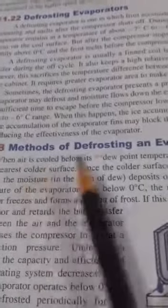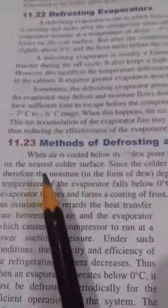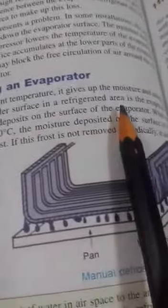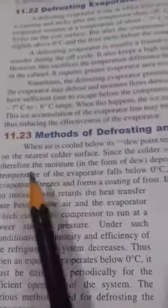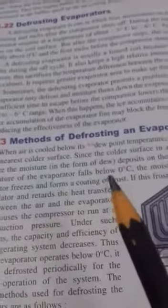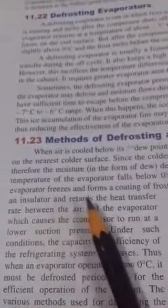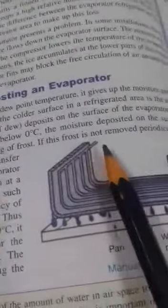Let us discuss the method of defrosting. An evaporator is defrosted when air is cooled below its dew point temperature — it gives up moisture and deposits it on the nearest colder surface. The colder surface in the refrigerating area is the evaporator, so moisture in the form of dew deposits on the evaporator surface. When the evaporator temperature falls below zero degrees centigrade, this moisture freezes and forms a coating of frost.